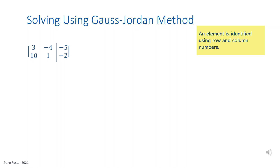Referencing rows using their numbers helps in writing out the necessary operations to transform matrices. In this video, row numbers will be referred to as capital R with a sub-number. So row 1 is R-sub-1 and row 2 is R-sub-2. Now let's start. First, work on changing element 1,1 to 1.